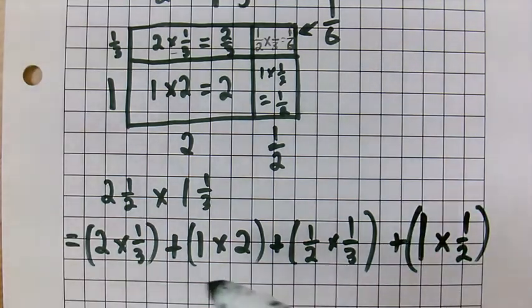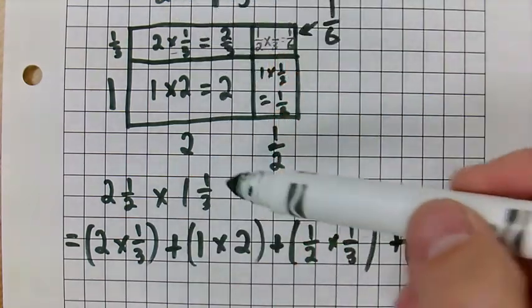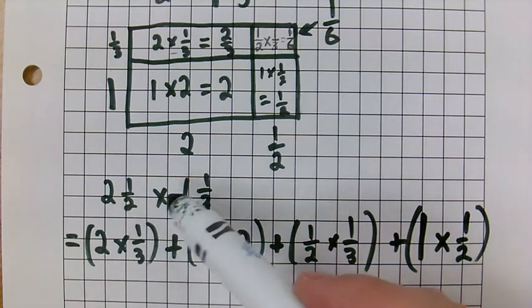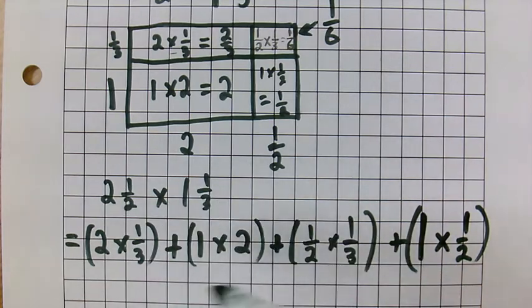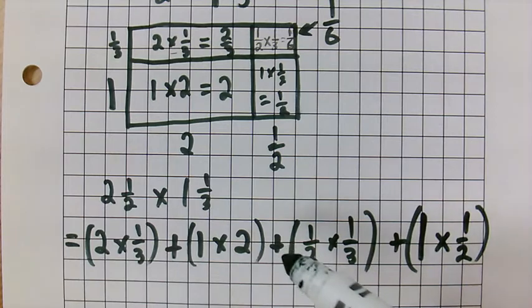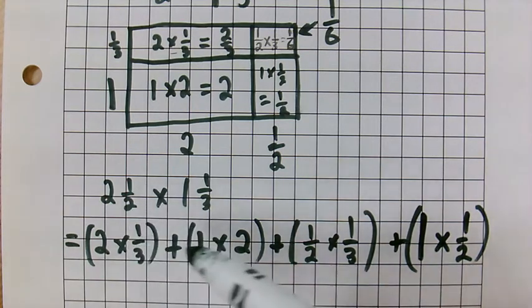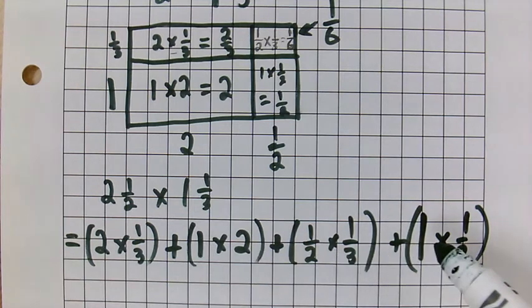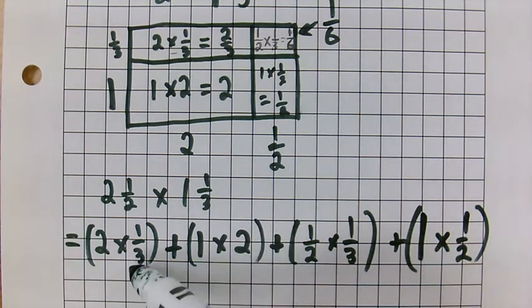Now, just take a quick look here. Each of these parts that were part of our original question, the 2, the 1, the half, and the third, count how many times they are down here. The 2 is here once, twice, the half is here once, twice, the 1 is here once, twice, and the third is here once, twice.